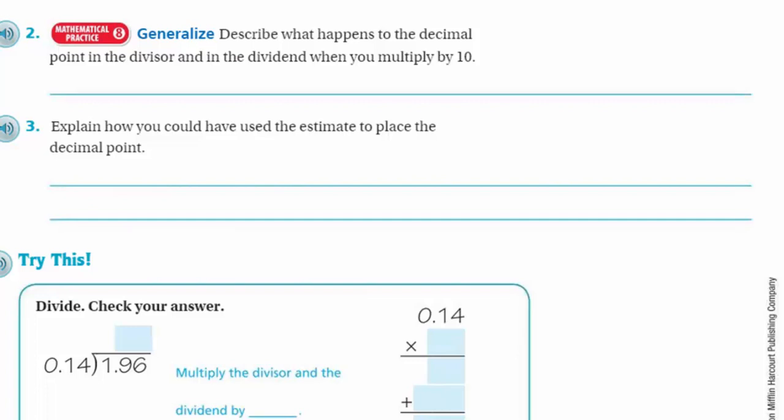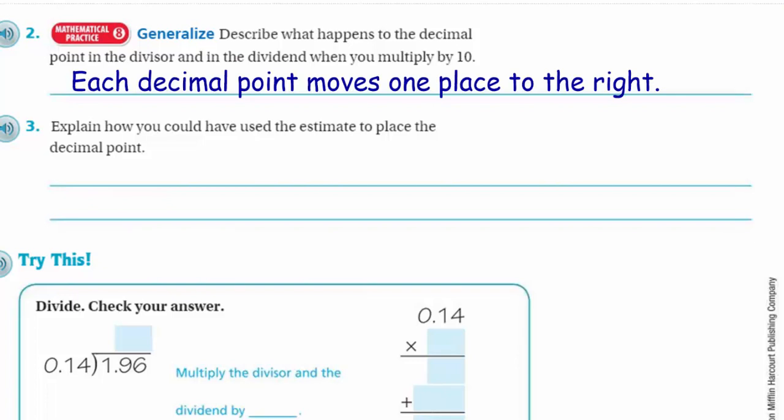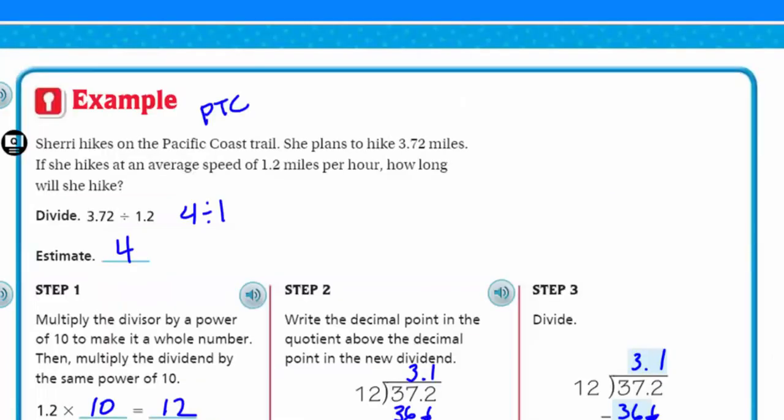Anyway, here we go. It says to generalize. Describe what happens to the decimal point in the divisor and in the dividend when you multiply by 10. Yes, it's all been about multiplying by 10. Each time the decimal point moves one place to the right. Now, question 3 says, explain how you could have used the estimate to place the decimal point. Our estimate up above, the 4, how could you have used that estimate to place the decimal point? I could have used the estimate 4 to place the decimal point after the 3 to show 3 ones and 1 tenth. And I would only say that is because we know that our answer had to be pretty close and the value wouldn't have been 31. It would have been 3 because we wanted to have it close to what our estimate was.